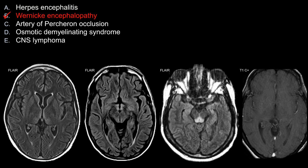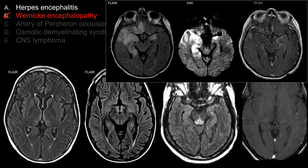Let's look at some of the choices that do not work as well here. Choice A, herpes encephalitis — typically the involvement is the medial temporal lobe and limbic system. It's often bilateral but asymmetric. There is typically restricted diffusion and variable enhancement, and sometimes you can see microhemorrhage on susceptibility-weighted imaging. This is due to HSV1 and needs to be recognized because you need to treat the patient empirically; if you don't recognize the finding and don't initiate treatment right away, the long-term sequelae could be pretty bad.